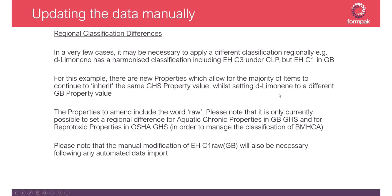Currently there's only a property set up for changing the GB GHS environmental classification. We've also recently added the possibility to add a different classification for OSHA GHS in the area of reproductive toxicity, to manage the difference for BM-HCA where the EU has classified it as Repro 1B. It's important to note that if there's any automated data import from the labeling manual, the manual change to EHC1 raw property for GB will also be necessary.